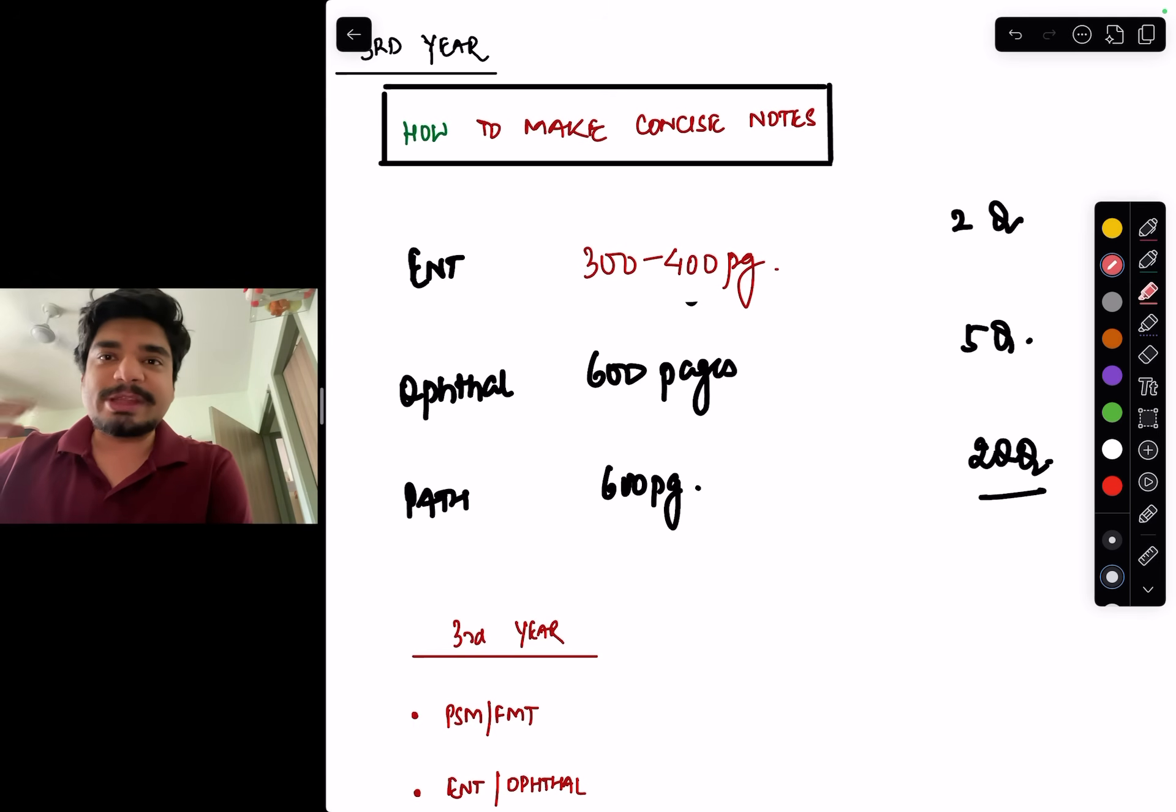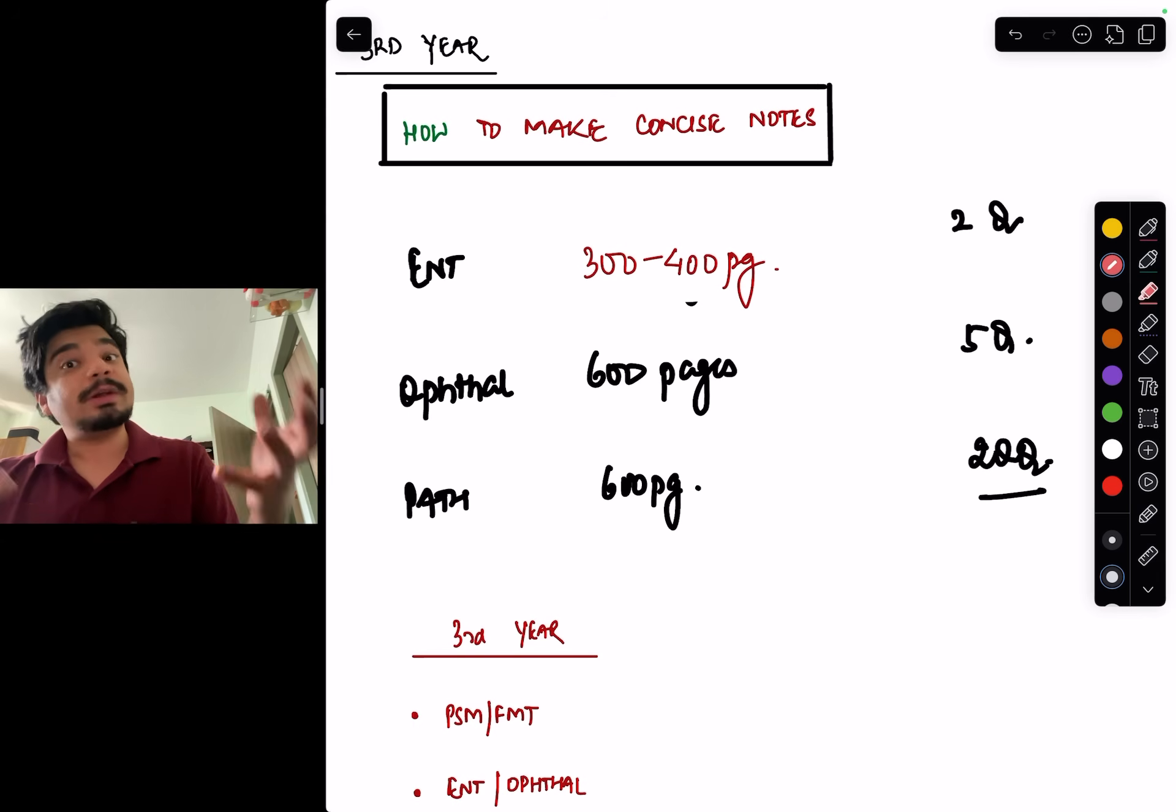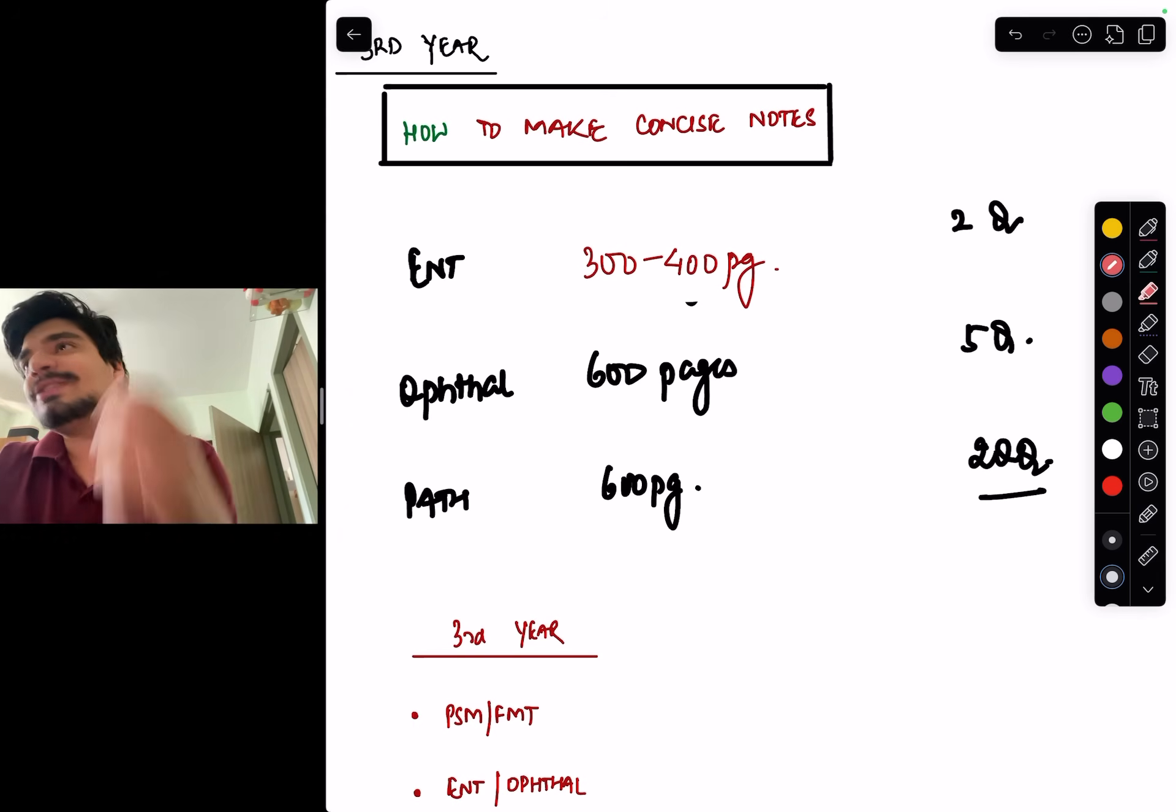ENT, probably there will be 400 pages notes. How many questions come from ENT? 2, 3. Ophthal, there will be 600 pages notes. Again, how many questions will come? 4, 5. Path has 600 pages notes, but 20 questions come from it. So, you have to have a proportionate distribution, right? So, this is where the concept of concise notes comes in.